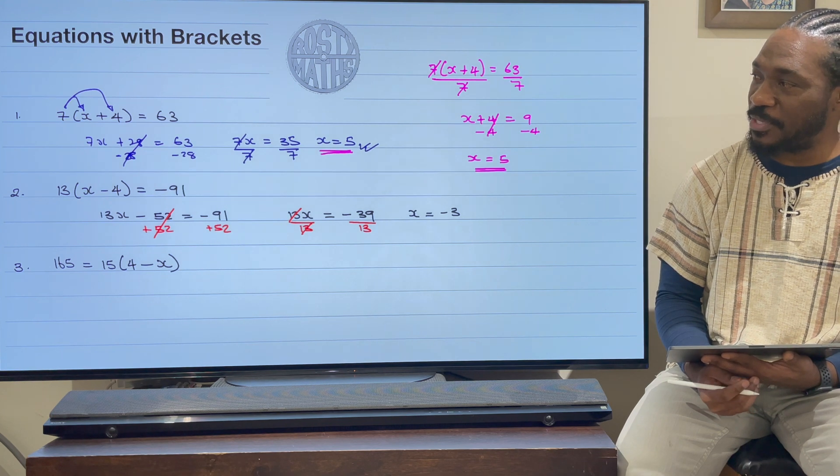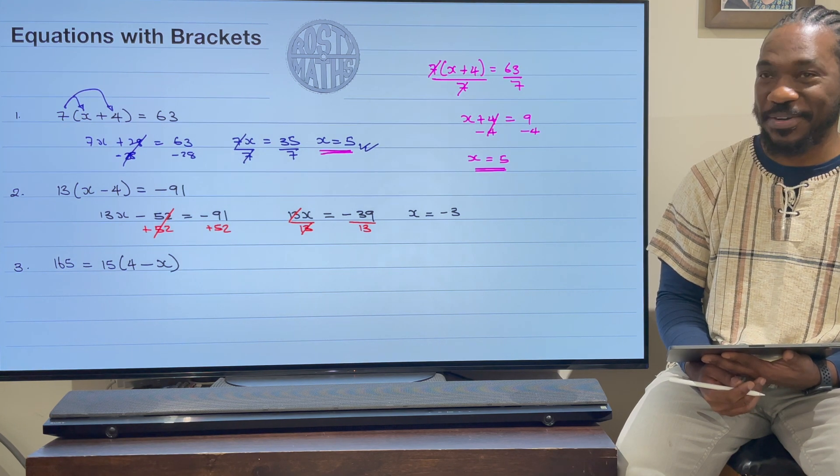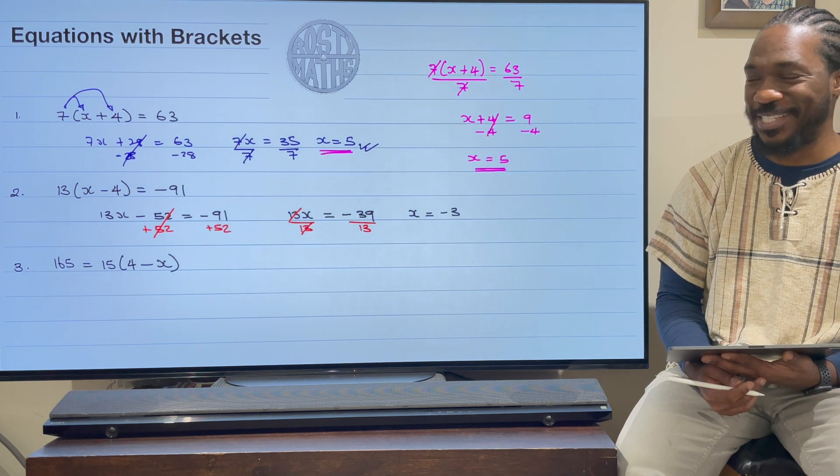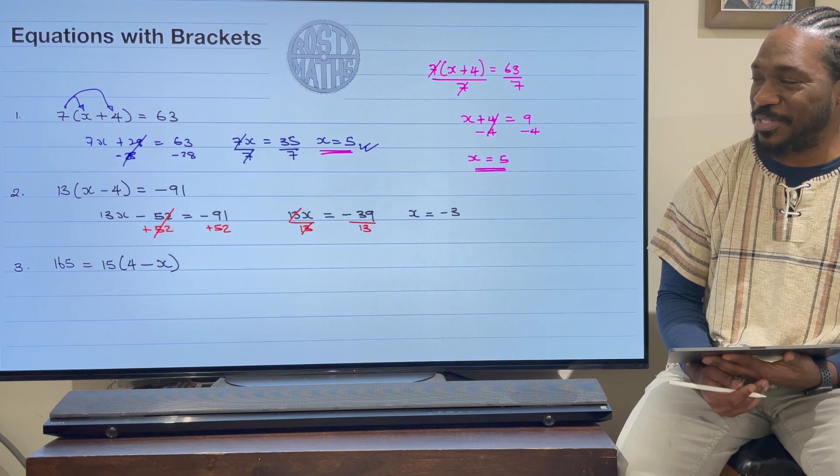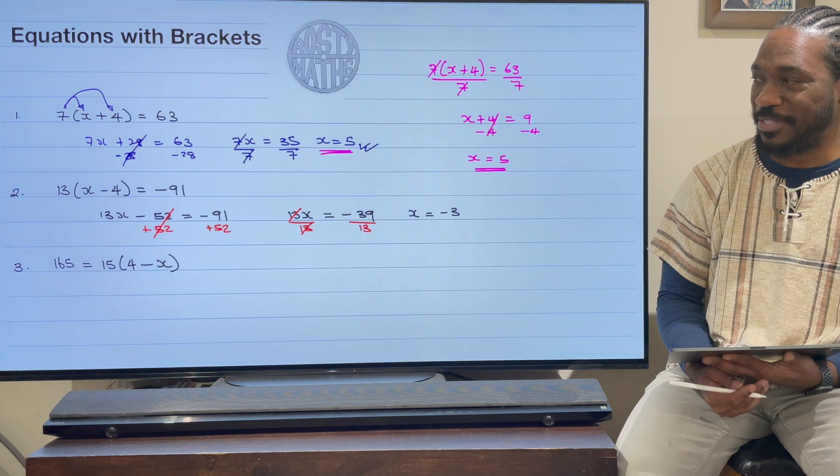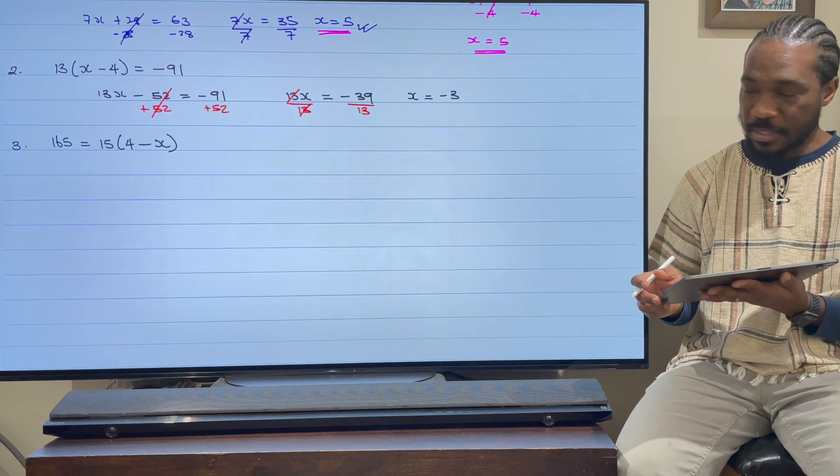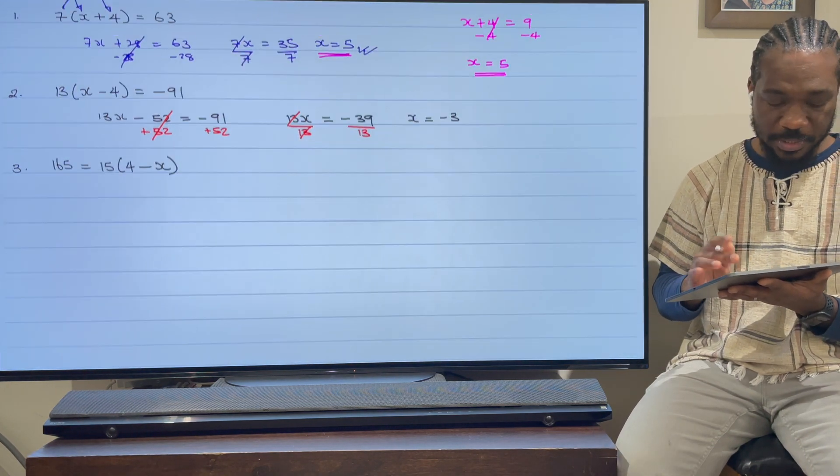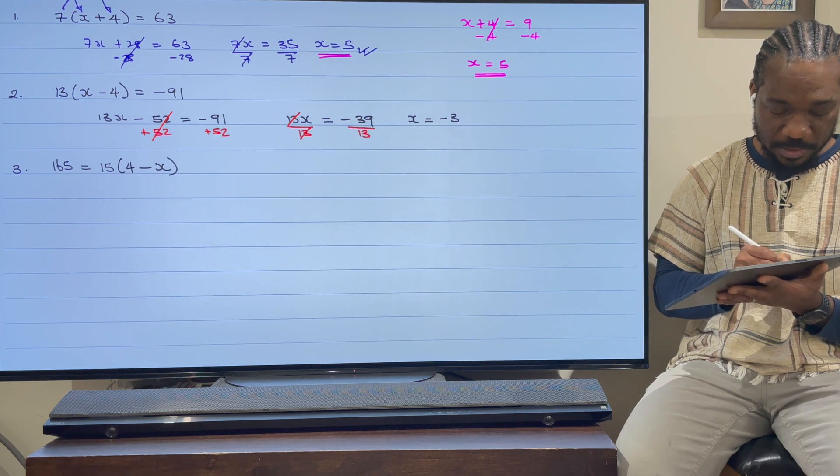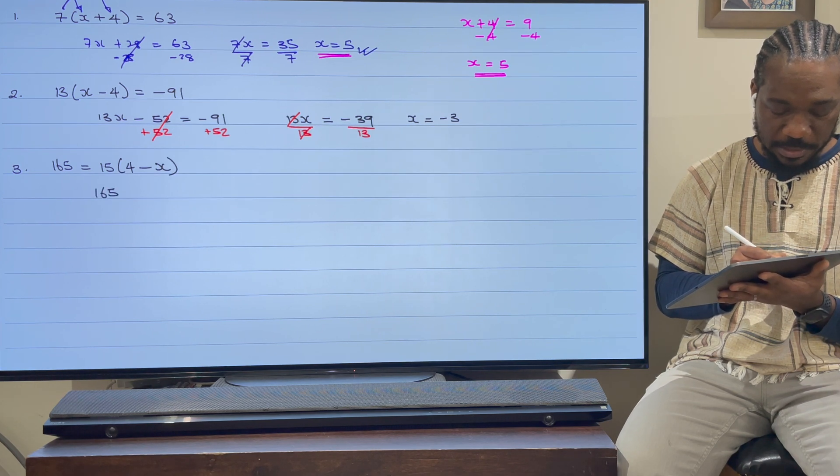All right, if you think you're getting the idea, see if you can have a go at number 3. That one's a bit of a doozy this one, but I'm just going to jump straight into it and have a go. All right, here we go. So again, same method. I'm going to expand the brackets first.